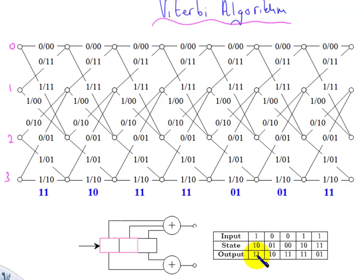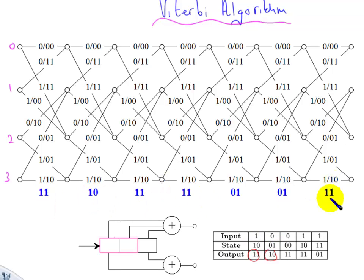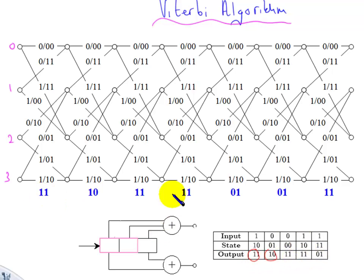What I'm going to assume is that the channel is noiseless, so that this is the code word that was transmitted into the channel and this is what's received. So we're going to look at the easy case where every single code word managed to get through to the receiver without error.